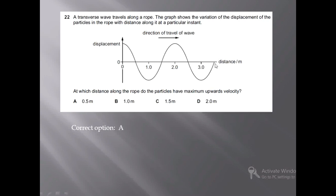To determine maximum upward velocity, we have to move against the direction of travel of the wave — from this point towards this point. Moving in this way: this will be downward motion, this will be downward motion, this will be rest, this will be upward motion, this will be rest, this will be downward, and this will be upward motion.